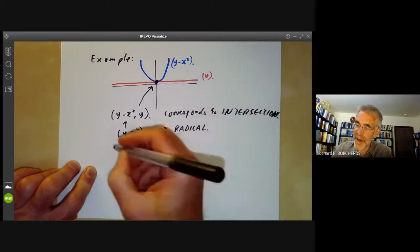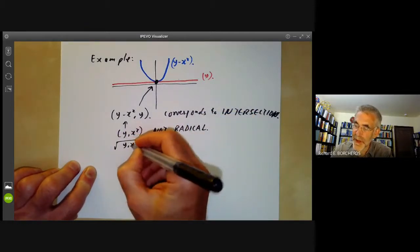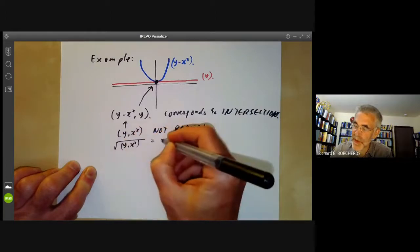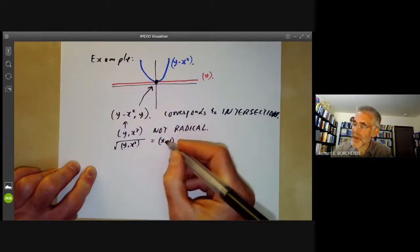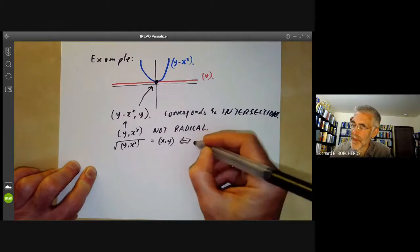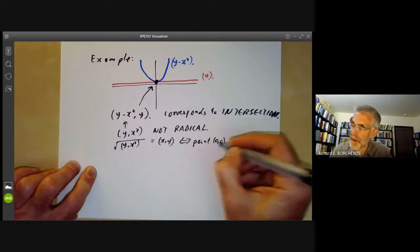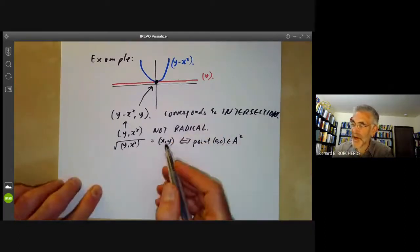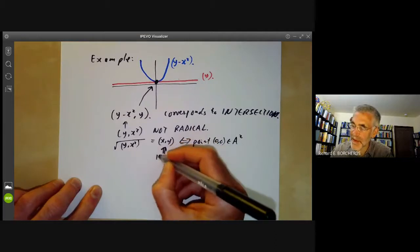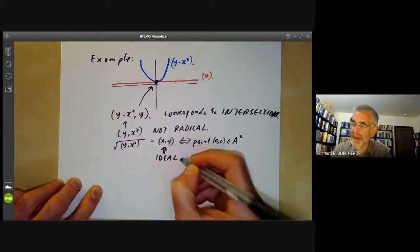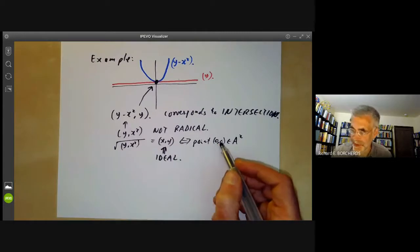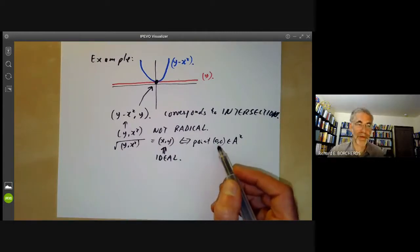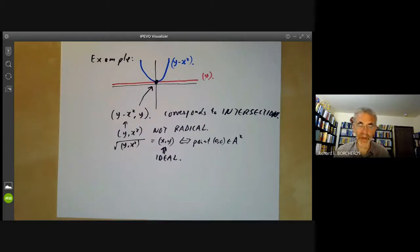Well, obviously, if we take the root of this ideal (y, x^2), it's just the point (x, y), and this corresponds to the point (0,0) in affine space. I'm afraid the notation is a bit confusing. So here I don't mean the point x,y. This means the ideal generated by x and y. And this is the point with coordinates zero, zero. I'm afraid left and right parentheses are a little bit overused. So they're sometimes used for ideals and sometimes used for points. And you have to figure out which is which.